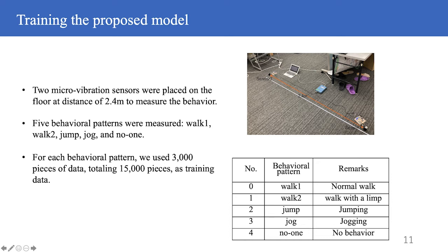Then we will train the model considering the measurement range of the micro-vibration sensors. We set up two micro-vibration sensors at 2.4 meters and measured the behavior between the sensors. The behavior patterns we prepared are shown in the table below. Walk 1 is normal walk. Walk 2 is dragging one leg. Jump, which is down on the step without moving. Jog is jogging. And no one is no behavior.